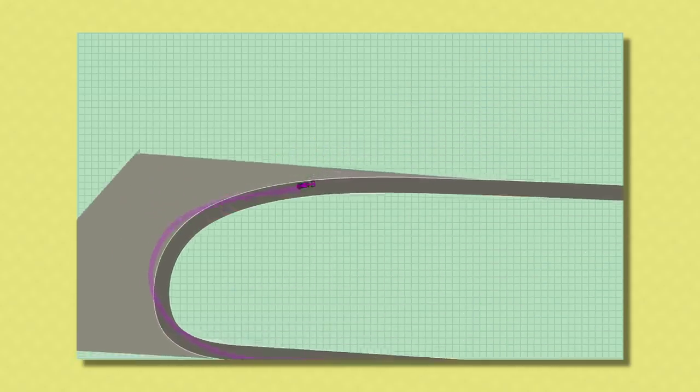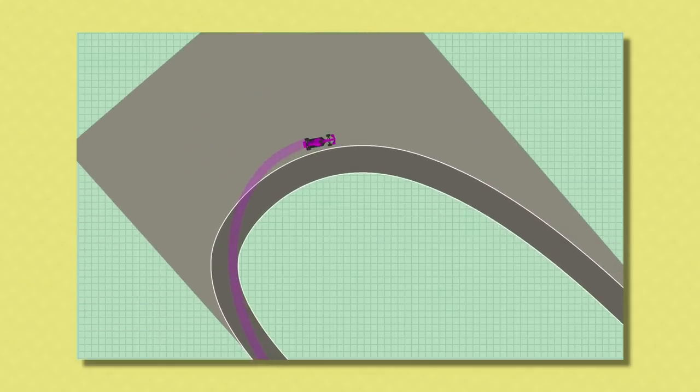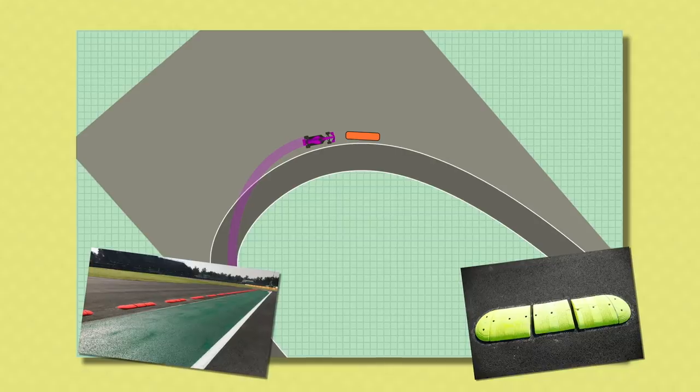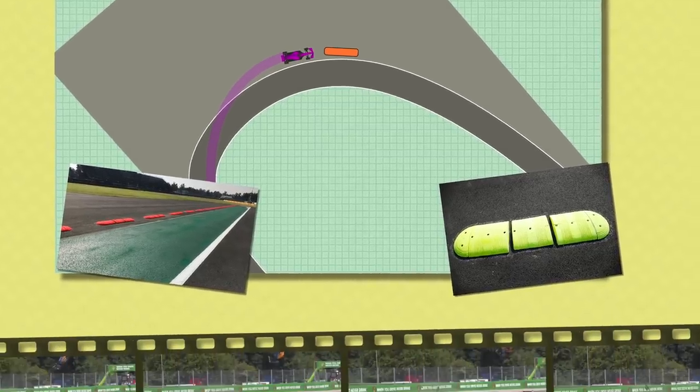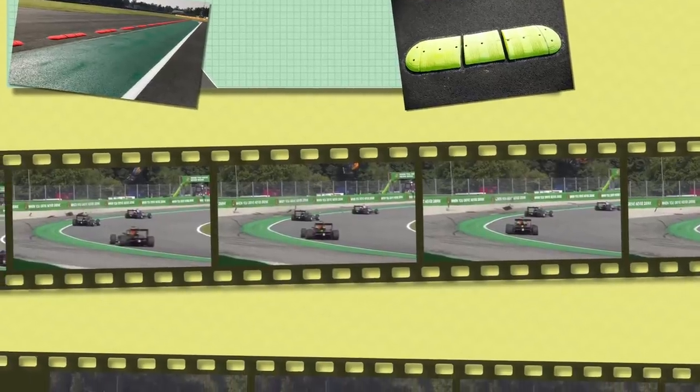It seemed harsh at first, but it does make sense. As well as threatening deletion of times, the FIA also attempted to put down a physical deterrent, the sausage kerb. These are some of the harshest kerbs in F1 as they've got the steepest ramp. Hitting these kerbs can break your car, coax them into a spin or even, as we saw on Friday, launch an entire car into the air.